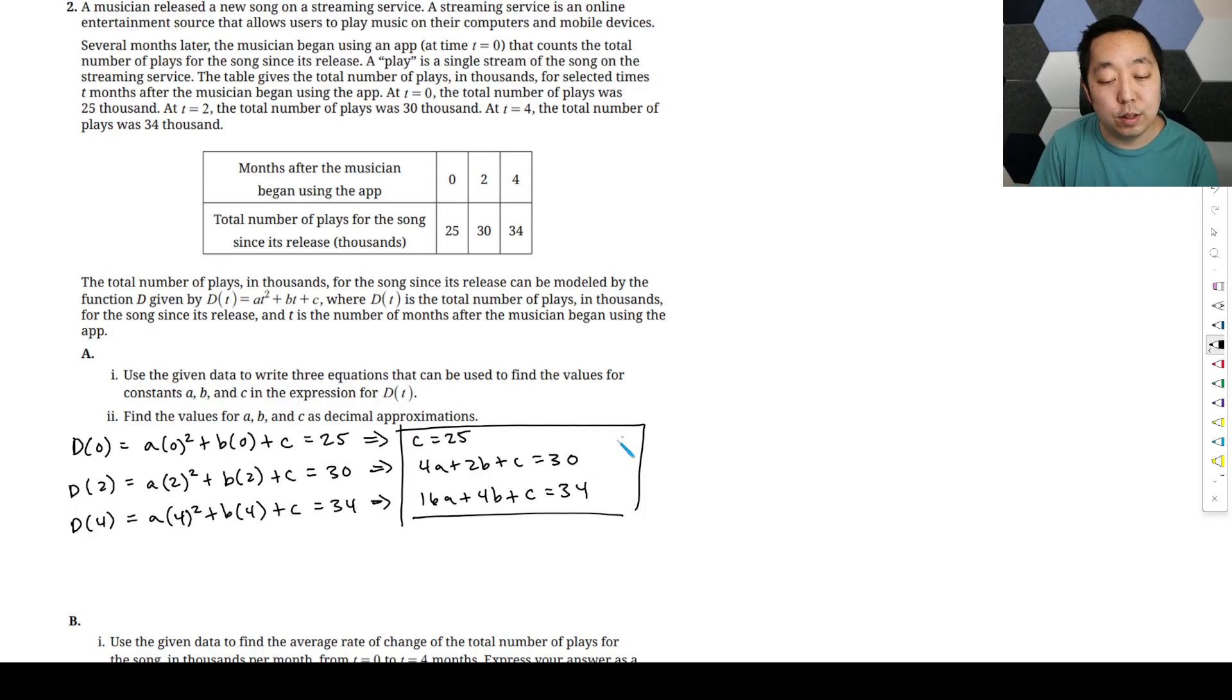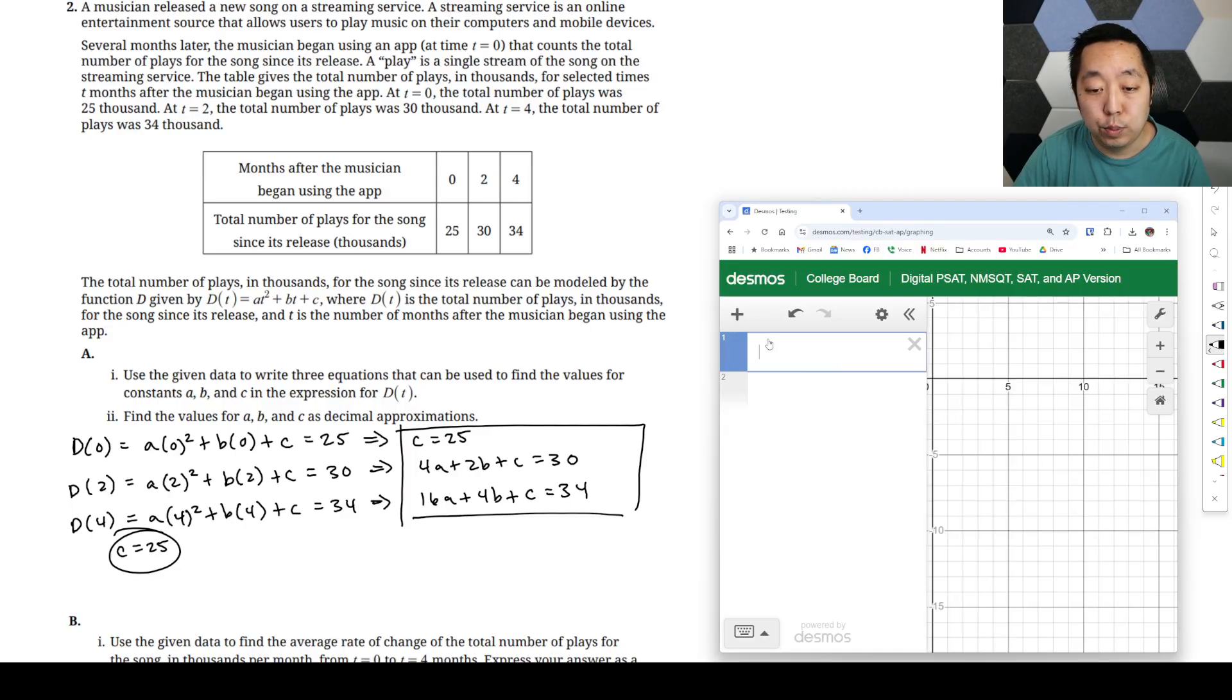Now we just want to find the actual answer. For part two, we know c equals 25. We can use Desmos to help us figure out the other two values because the other two are two equations, two unknowns. So we could just use this as a calculator question. Just pulling up Desmos, you could replace a and b with x and y. So 4x plus 2y plus 25 equals 30, and then 16x plus 4y plus 25 equals 34.